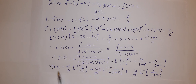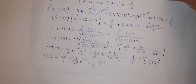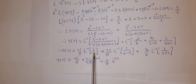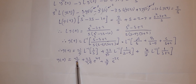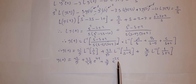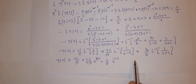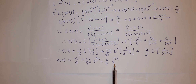So y(t) equals negative 1 over 5 times the inverse Laplace of 1 over s, which gives 1, so we have negative 1 over 5. Plus 22 over 35 times the inverse Laplace of 1 over (s minus 5), which gives e to the power 5t. Plus 4 over 7 times the inverse Laplace of 1 over (s plus 2), which gives e to the power negative 2t.